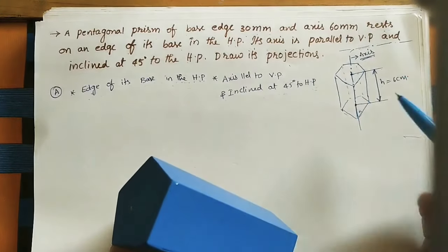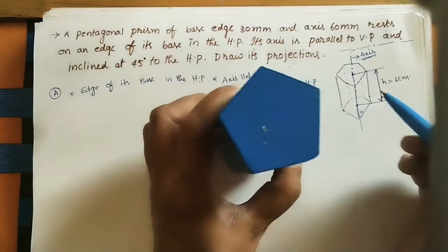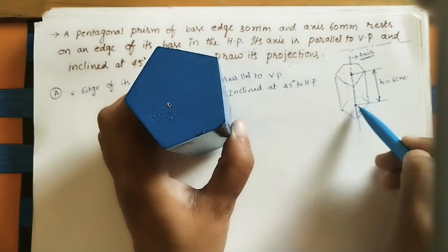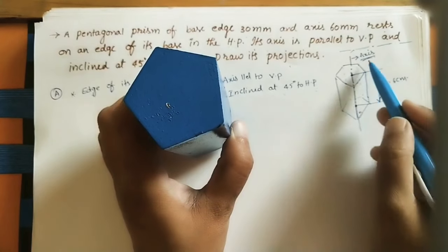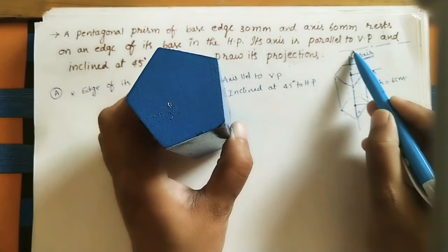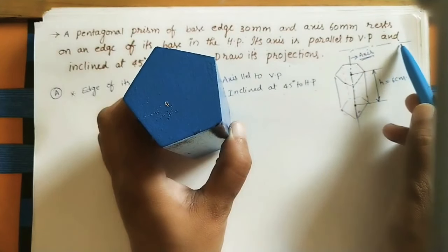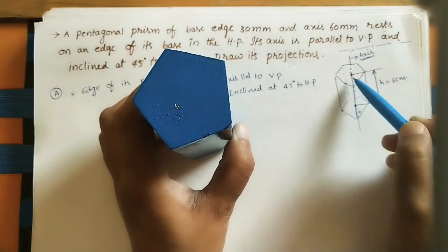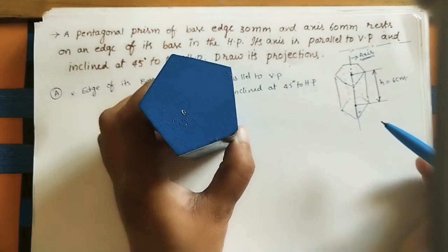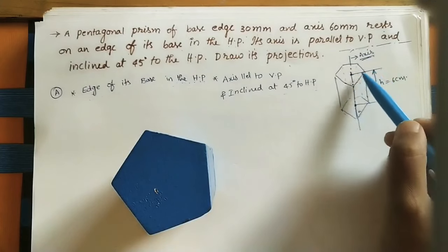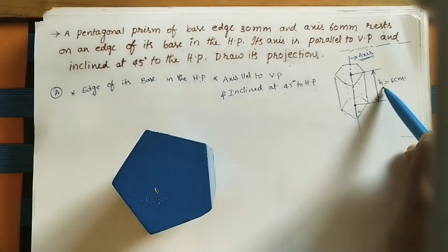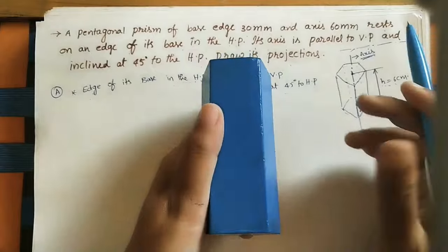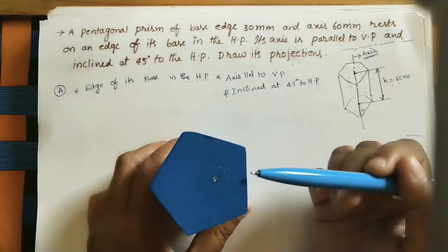Axis is 6 cm. The axis is the imaginary line joining the center of the top pentagon to the center of the bottom pentagon. We represent it as two big dashes with a dot. The distance between the two centers is called the height of the axis, or height of the solid. So this prism's height is 6 cm.